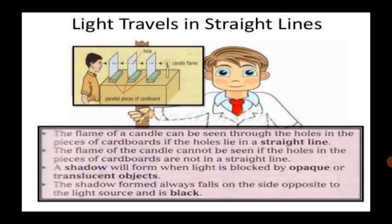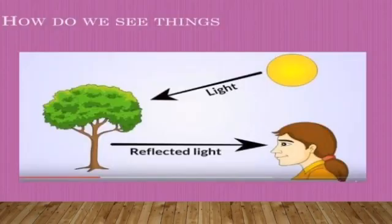Reflection of light: How do we see an object? The rays of light falling on an object from a source of light are thrown back from the surface of that object. This is called reflection of light. We see the object when the reflected rays reach our eyes.